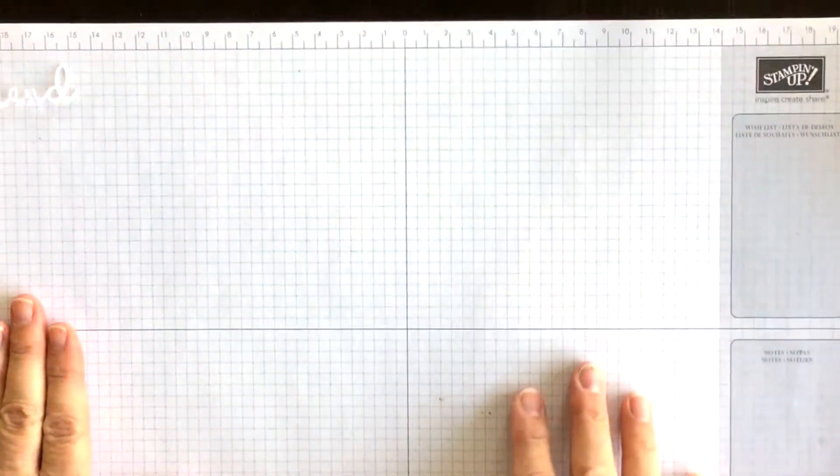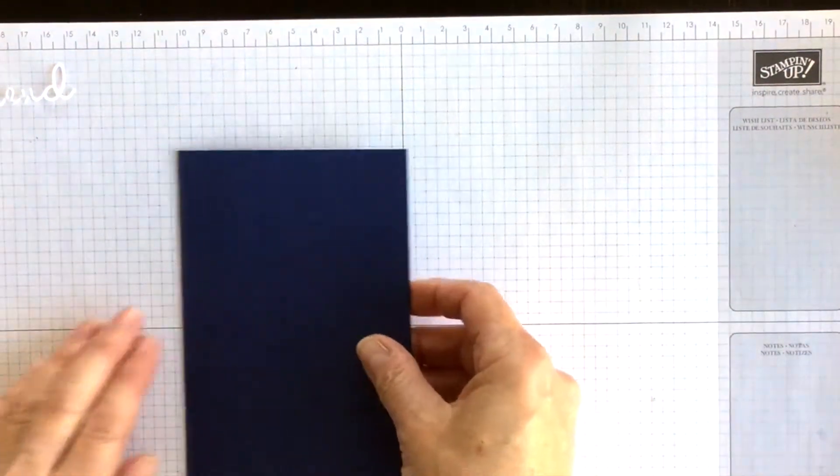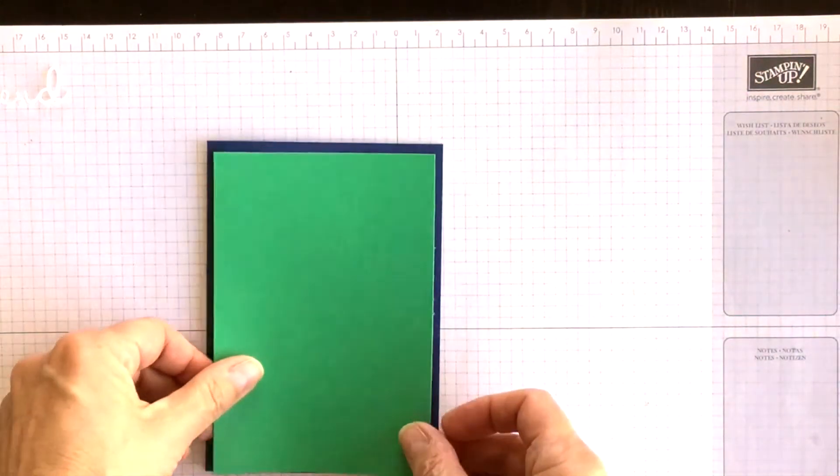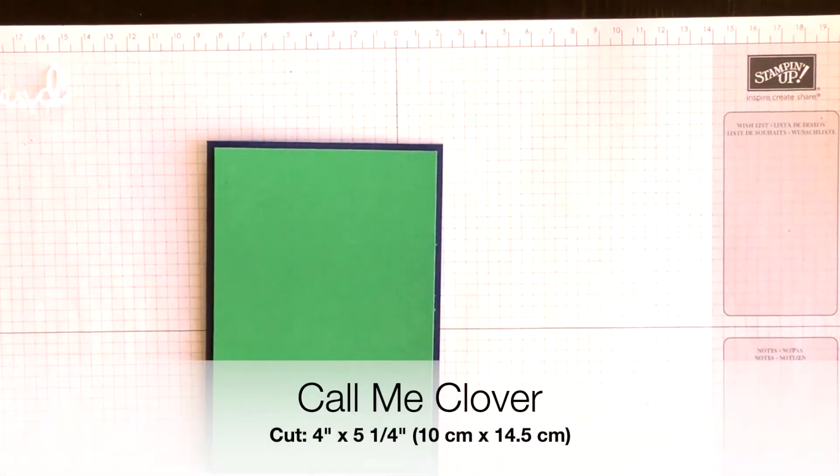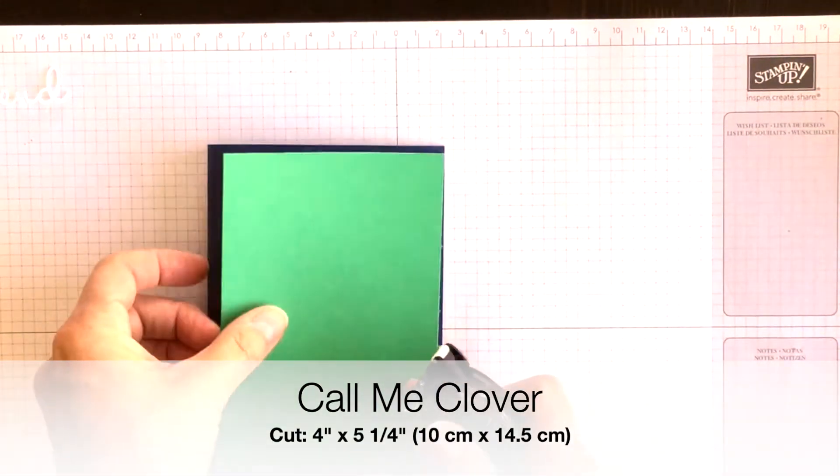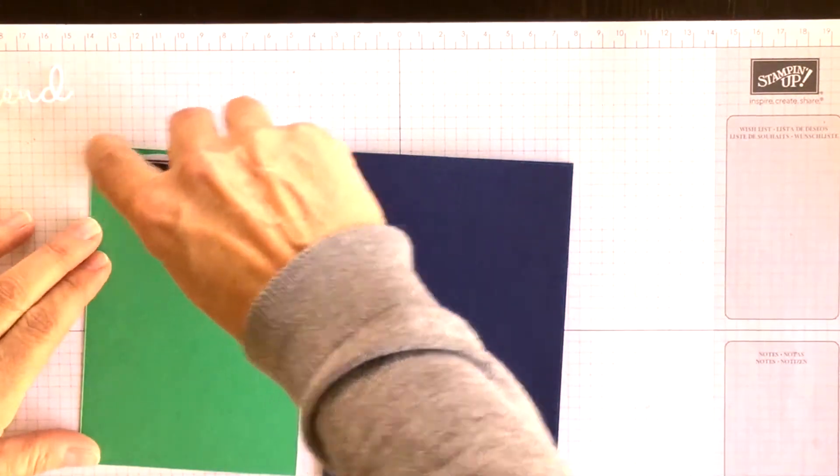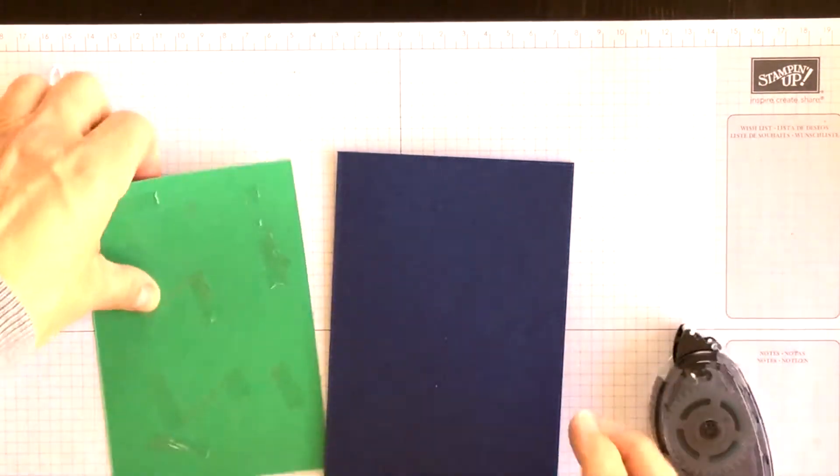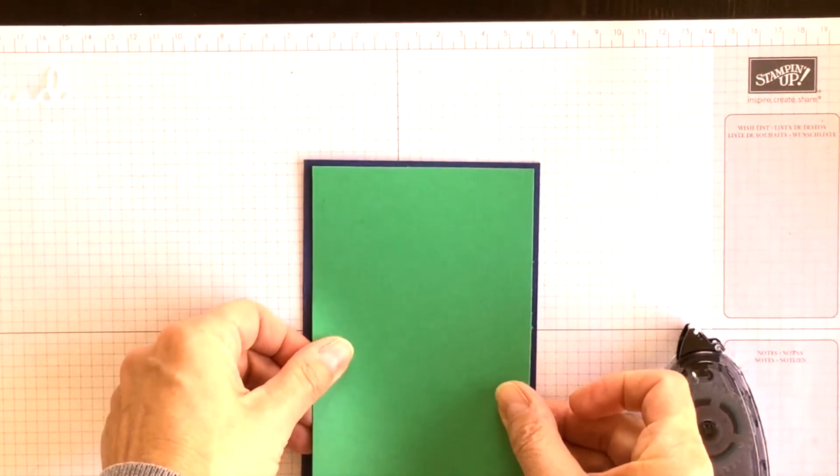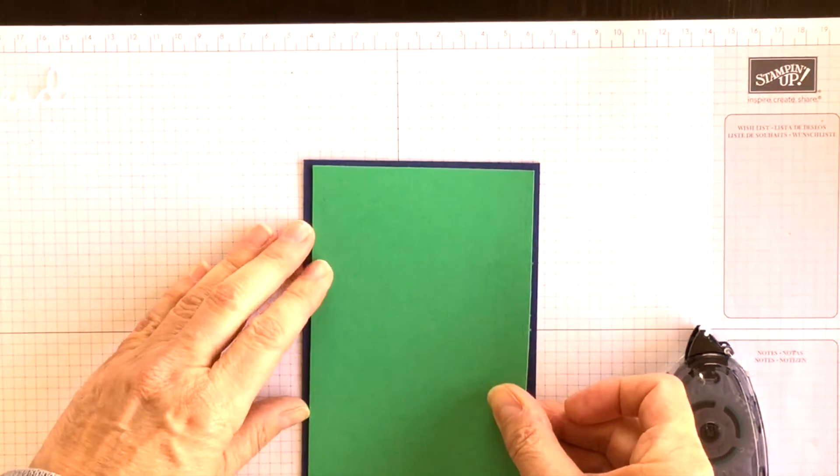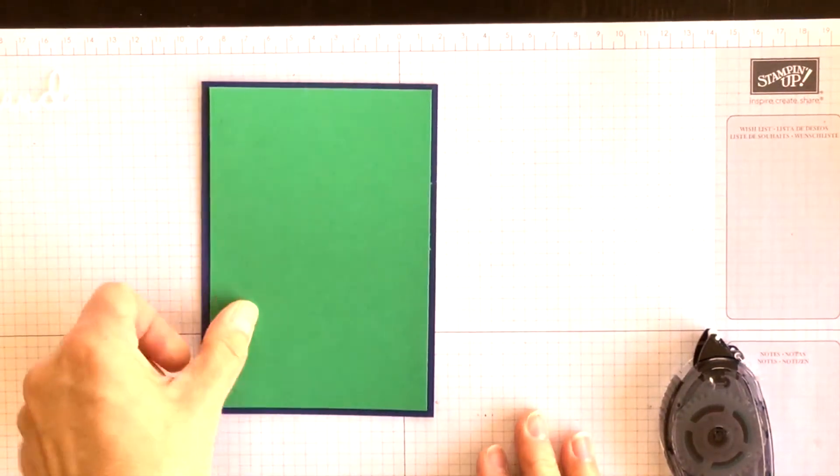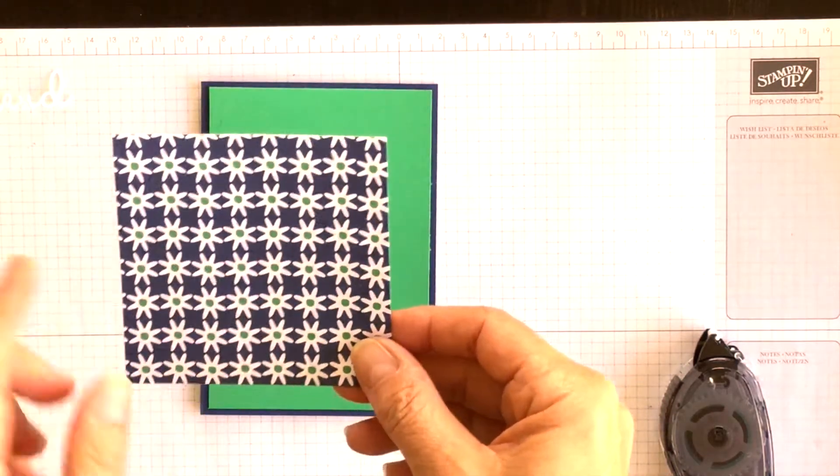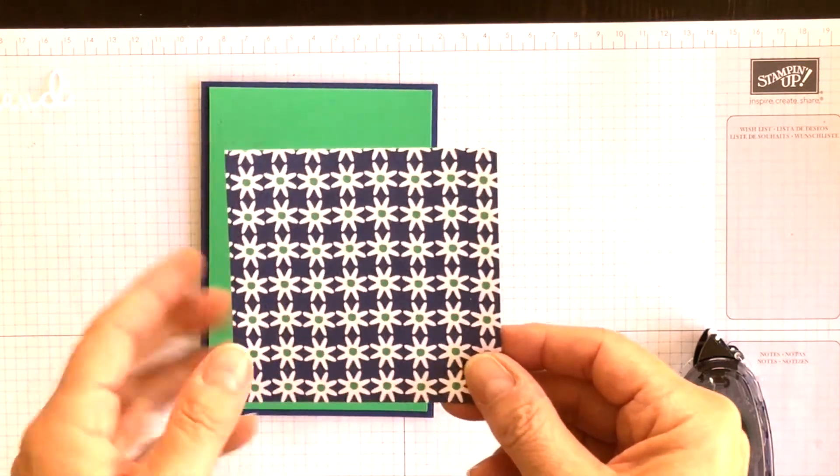All right, I'm just going to set that there for a second and I'm going to bring back in my Knight of Navy card base. To that I'm going to attach a piece of Call Me Clover. It's a layer for the front of my card and I'll use my snail adhesive to adhere it. And then to that I'm going to add a layer of the Happiness Blooms Designer Series Paper.